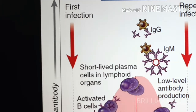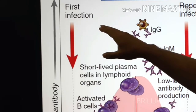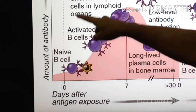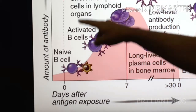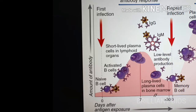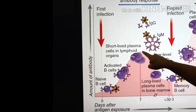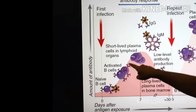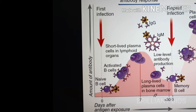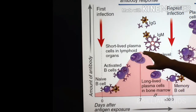After about seven days of the first infection with a new pathogen, the antibody titer reaches its peak. Looking at a plot of antibody amount versus days after antigen exposure, you can see that after the first infection, reaching the highest level of antibody requires zero to seven days. After elimination of the antigen or pathogen, the antibody level falls.